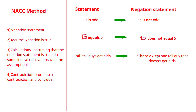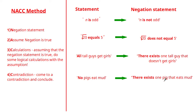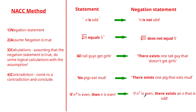So 'there exists one tall guy that doesn't get girls' would be a much more suitable negation statement. When you see the keyword 'all,' an associated keyword for the negation should be 'there exists.' Similarly, for 'no pigs eat mud,' a good negation is 'there exists one pig that eats mud.' Notice how we use the keyword 'there exists one instance' quite often for these negation statements.